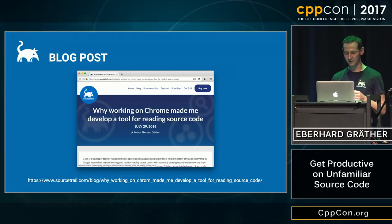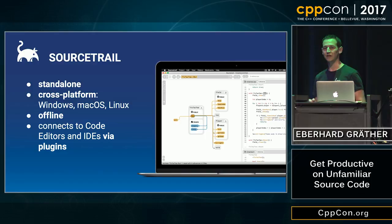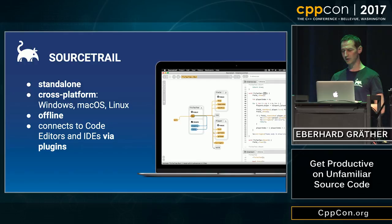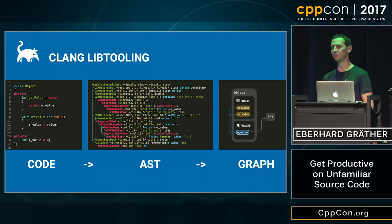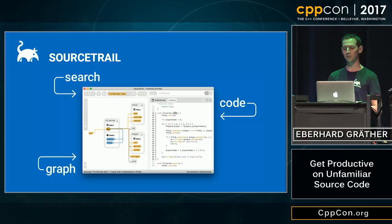It turns out yes, it's possible. Our result is SourceTrail, which is an offline cross-platform developer tool. What it does is it indexes your source code — it uses Clang lib tooling to retrieve all the information about which classes exist and how they reference each other. The user interface is then made for simple navigation and exploration, consisting of search, code, and graph. And demo time.